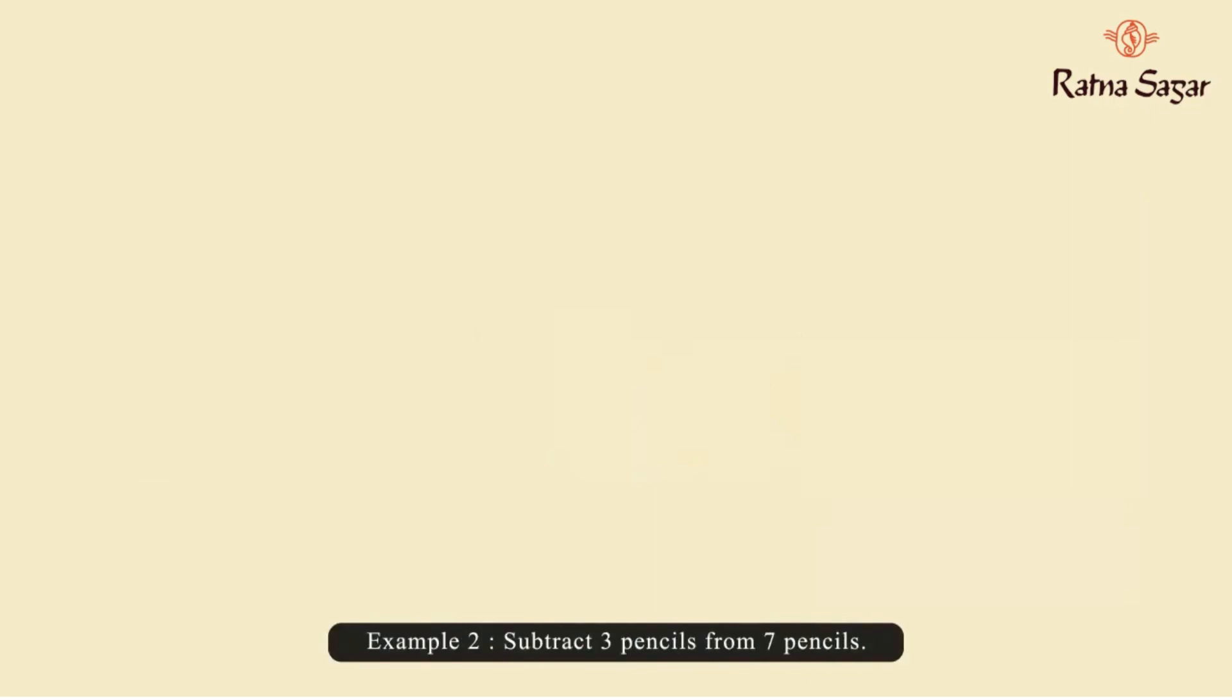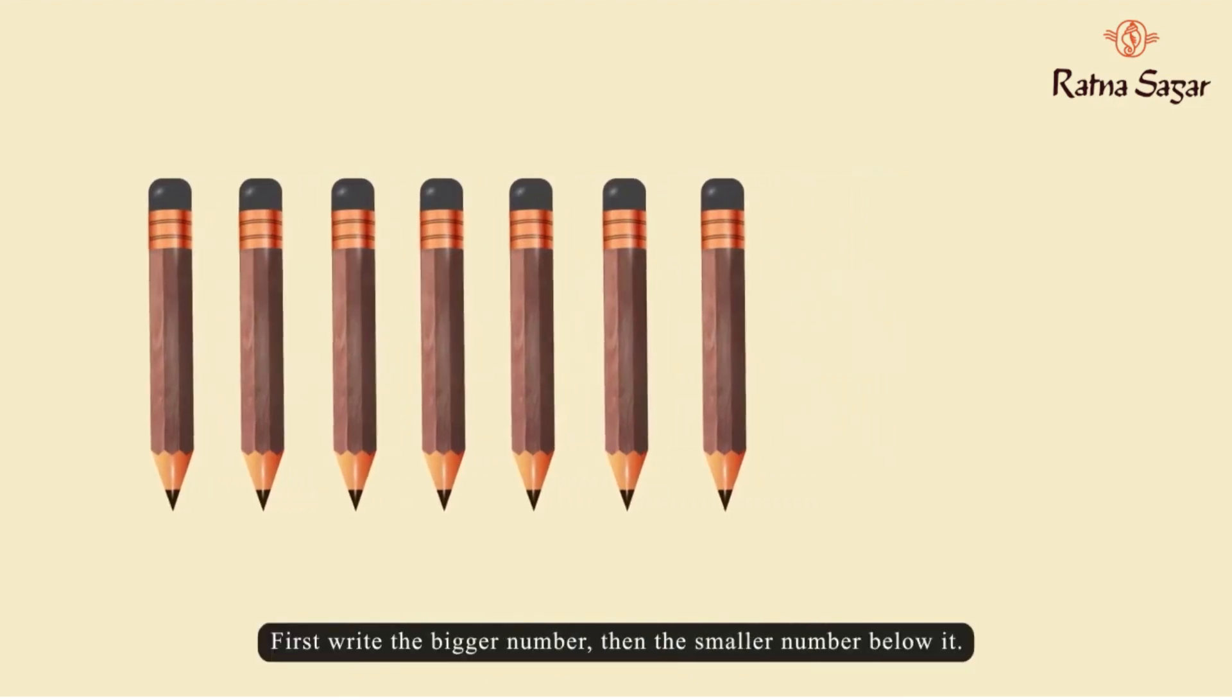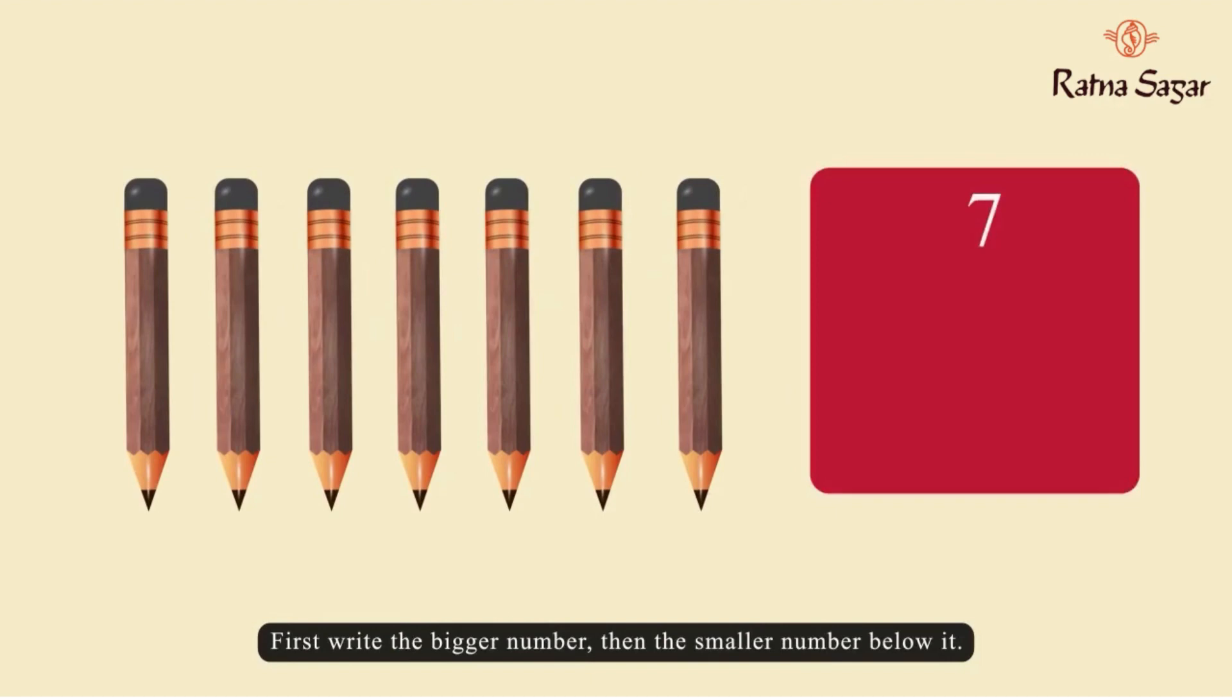Subtract three pencils from seven pencils. We will write three and seven in the columns. First, write the bigger number, then the smaller number below it.